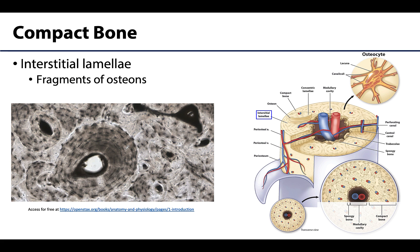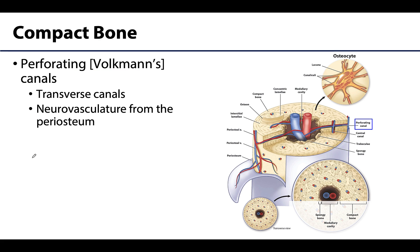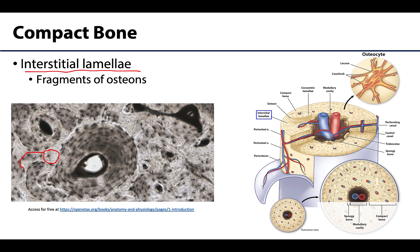In areas between neighboring osteons there are often fragments of older osteons that are partially destroyed due to bone growth or remodeling. These are called interstitial lamellae. They may still contain lacunae and some components of former osteons, but lack the organized structure of a complete osteon. This makes sense because bone is dynamic — osteons are broken down and new ones are built throughout life, not just when bone length changes.